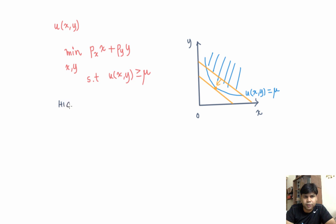Hicksian demand is a function of—let me put H here—PX, PY, and mu (the level of satisfaction). If you increase mu, the indifference curve will shift.